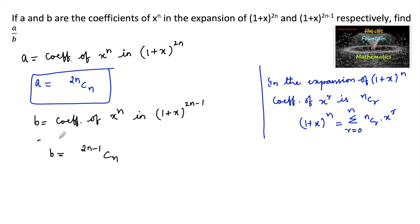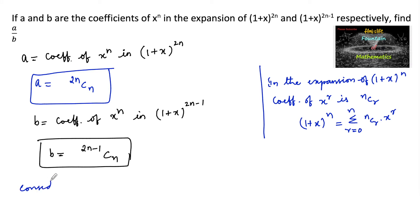So this gives us a and b. Now we need to find a upon b. Consider a upon b, which is equal to 2nCn upon 2n minus 1 Cn.